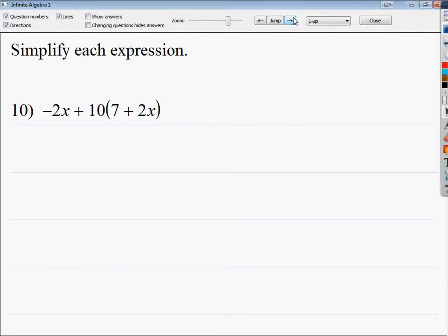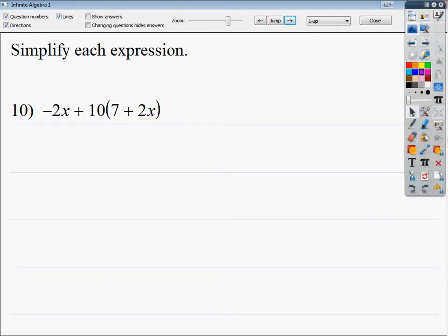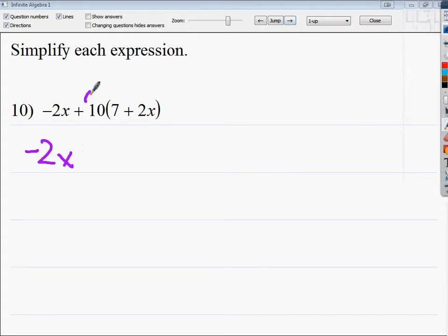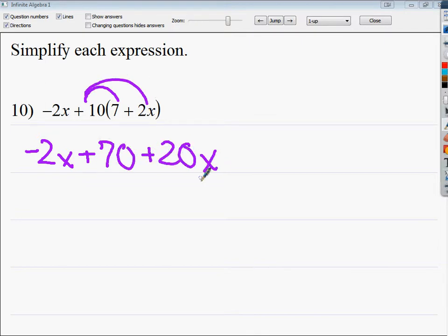That one's pretty much the same. Let's do this one. That negative 2x, we're just going to drop that down. Then I've got 10 times 7, and it gives me 70. 10 times 2x gives you 20x. So I'm dealing with combining like terms now, here and here. Negative 2 plus 20 gives you plus 18x, and then just bring down your plus 70. Pretty simple.